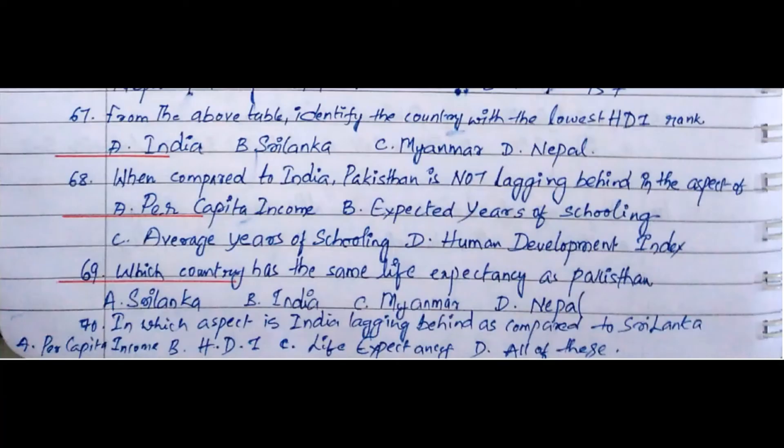Understand the data in the table and answer the questions. Question 67: From the table, identify the country with the lowest Human Development Index rank. Option A. India, Option B. Sri Lanka, Option C. Myanmar, Option D. Nepal. The answer is Option D. Nepal.